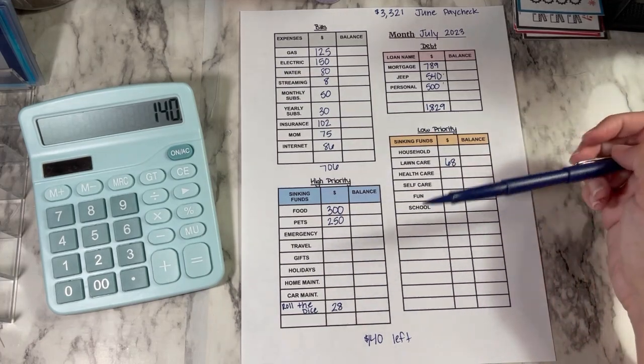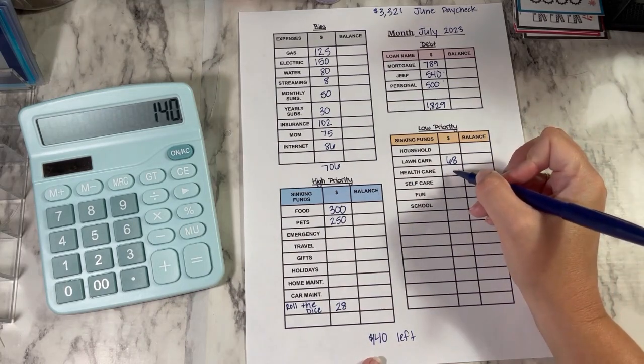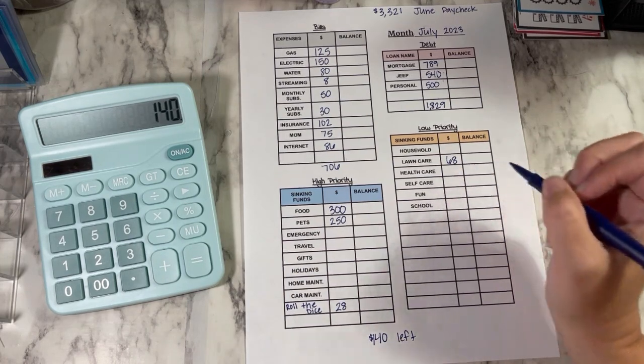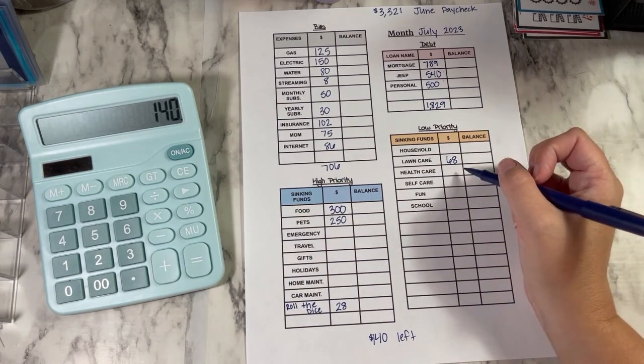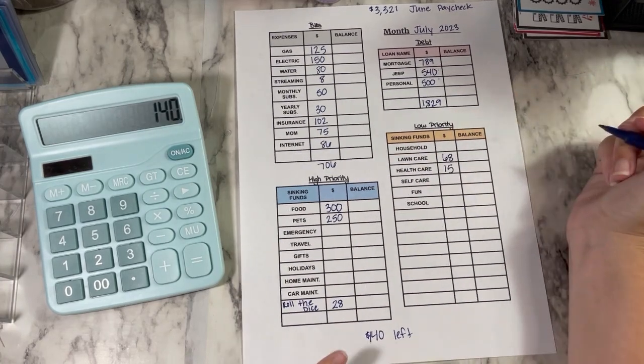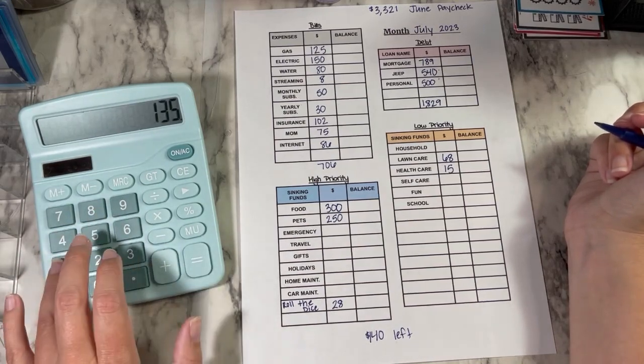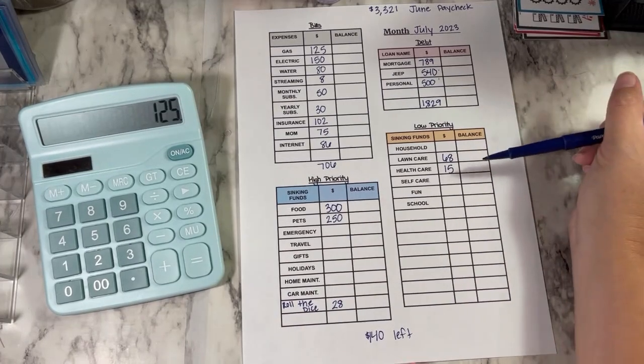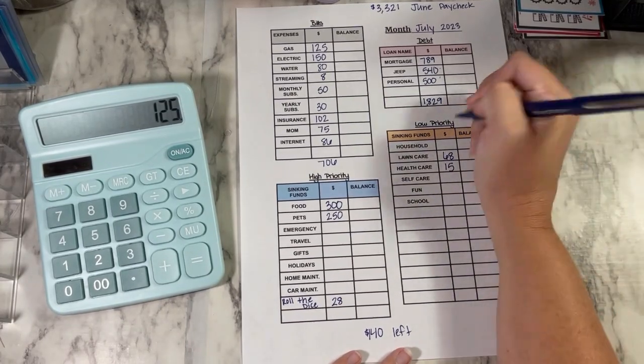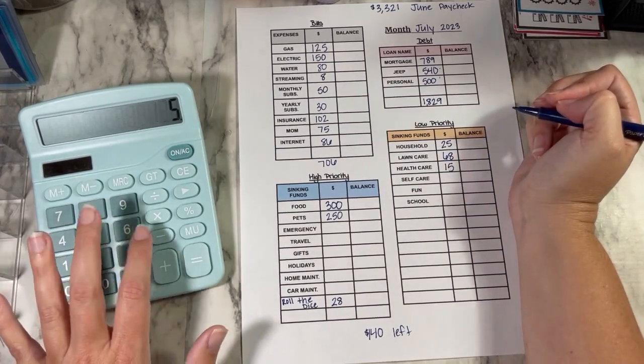So high priority goes first. However, I do have an eye appointment coming up in July, and it's before my next paycheck. So I need to make sure I have money in there. So I'm going to go ahead and put $15 there. Then I subtract. And then household, I know I need to get toilet paper. So I'm going to do $25 there. I get my toilet paper at Sam's, so it lasts me a few months at least.